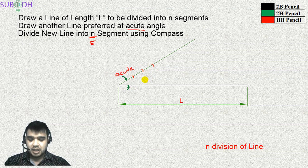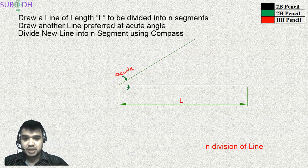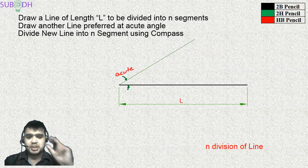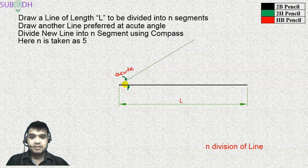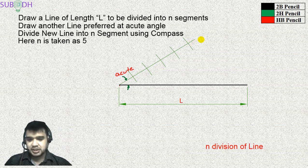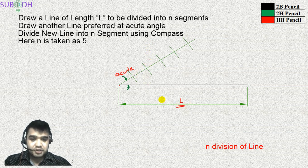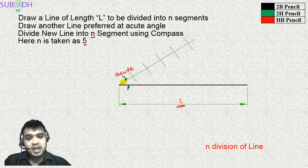The reason we use an acute angle is that if the division values come out as decimals, measuring them on a scale directly would be very difficult. So instead, I take a random compass distance — any convenient length — and cut off equal segments along the auxiliary line. Since the compass setting doesn't change, each segment on the auxiliary line is exactly equal, giving us 5 equal divisions on that line. This way we avoid decimal measurements entirely.